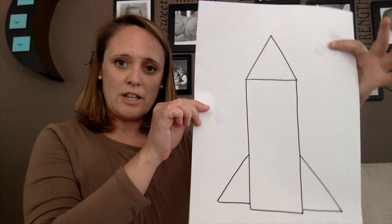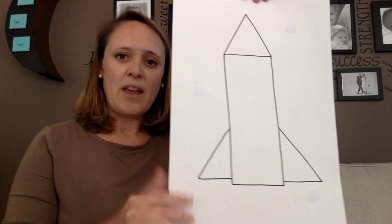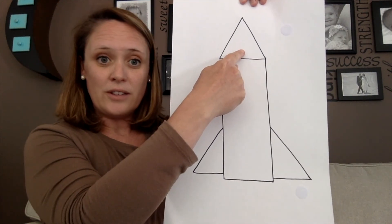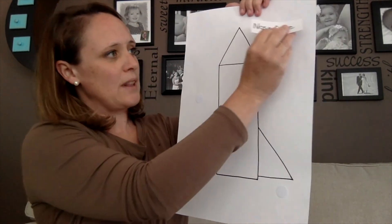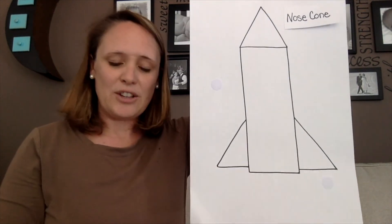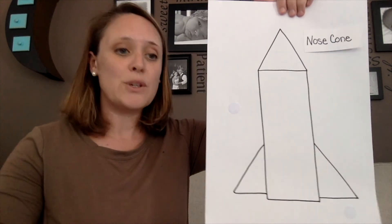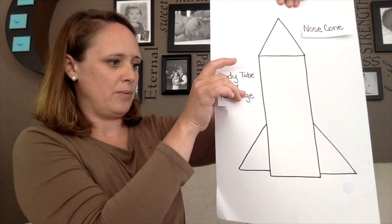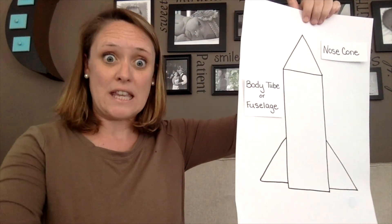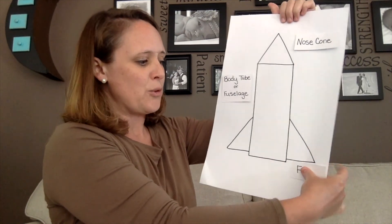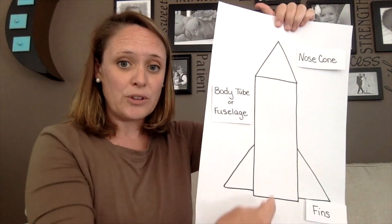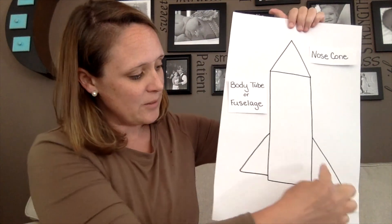Here is a beautiful drawing of a rocket, just a very simple one. Up here, this is called the nose cone. And this right here is called the body tube or the fuselage. And down here, these are called the fins. So if you create a rocket, you could have one that has a nose cone, a fuselage or body tube that's going to be long, and then some fins.